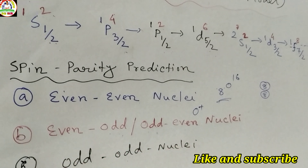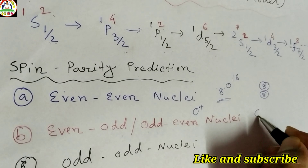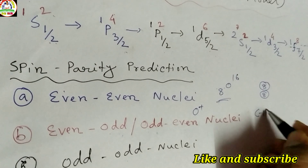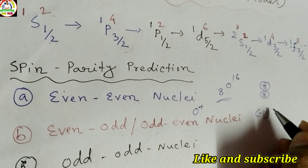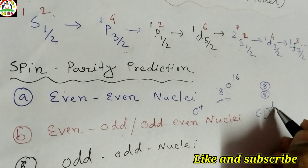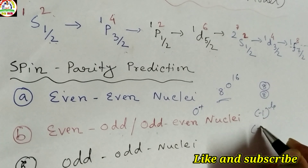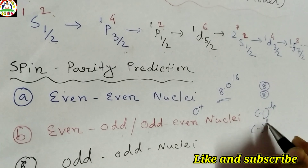For even-odd or odd-even nuclei, the parity can be calculated using the rule (-1)^L, where for a proton it is L_P and for a neutron it is L_N. The angular momentum is determined by the last unpaired nucleon's quantum numbers.